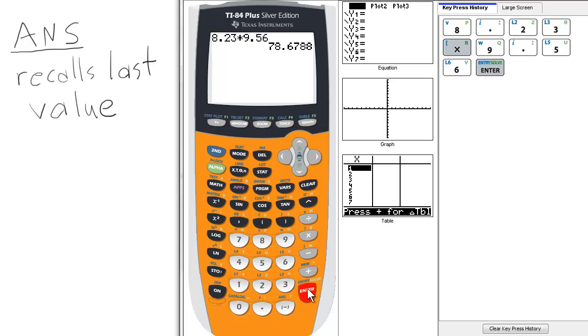And let's say it's a value we'd rather not type again, but we have to use again. Let's say for instance we have to subtract 11 from that.